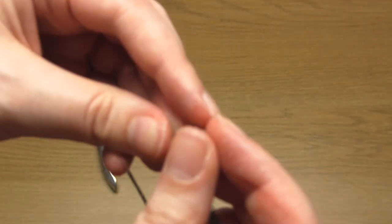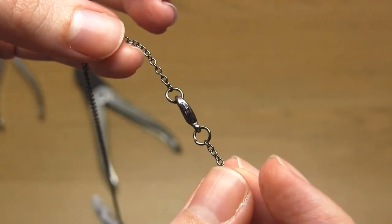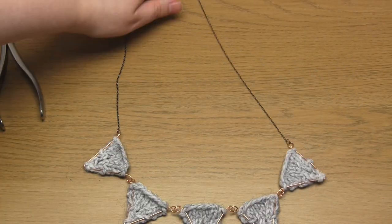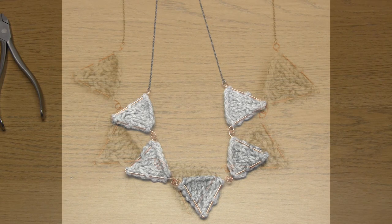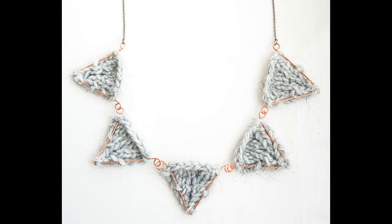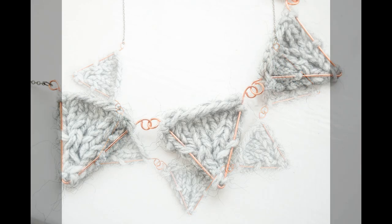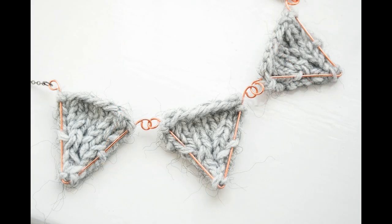And that's it, that's the bunting necklace completed. I really like the contrast between the copper wire and the knitting and I just think the wire work makes it look so much more modern. I really hope you enjoyed this project and thank you very much for watching.